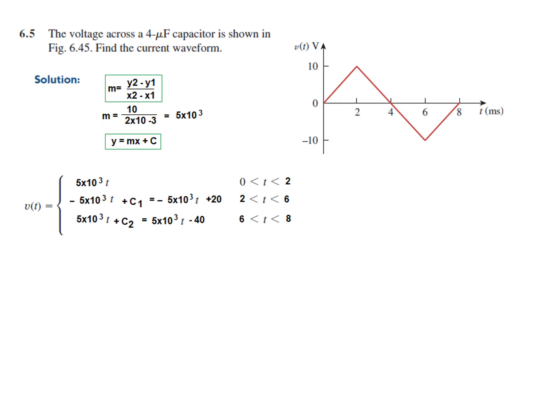The first line from 0 to 2 ms: its equation is y = mt, where in our case x is t. So it is 5 × 10³ × t. What about c? In this case the line intercepts at 0, therefore c is 0, so we do not write it. This is the line equation for the first segment.